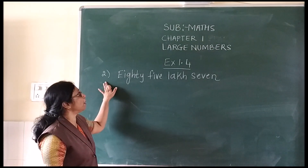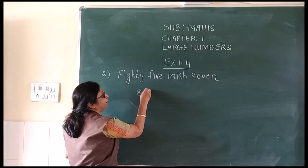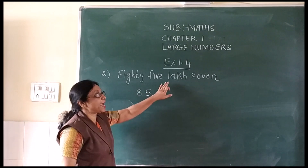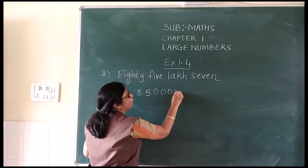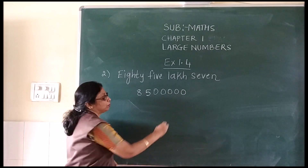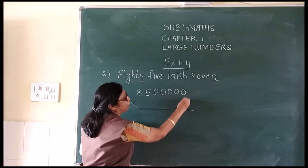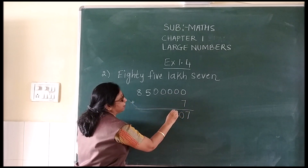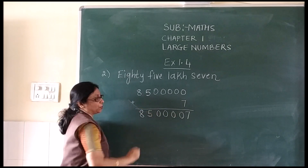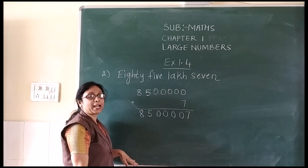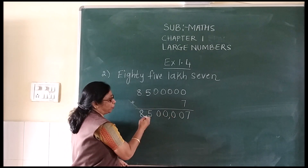Now we will see the second sum: 85 lakh. 85 — how you write 85? 8 and 5. Lakh has 5 zeros, so place 5 zeros: 1, 2, 3, 4, 5. Then we have 7, so you write 7 and add 0 plus 7 = 7. Then 0, 0, 0, 0, 5 and 8. After writing this, place the commas as per the international place value: 1, 2, 3 — 1, 2, 3.